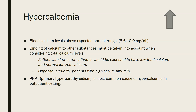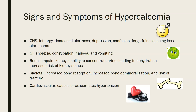It is way more common for patients to have low serum albumin than high serum albumin. Primary hyperparathyroidism is the most common cause of hypercalcemia in the outpatient setting. Let's look at some of the signs and symptoms of hypercalcemia.